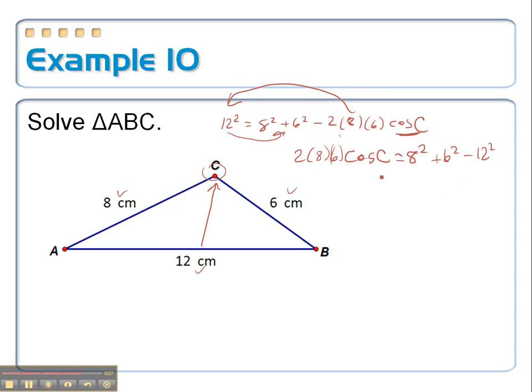Then to finish it off, I have to divide both sides by 2 times 8 times 6. That'll cancel out. And then I have to finally take the inverse cosine of this whole deal. So, 8 squared plus 6 squared minus 12 squared, all over 2 times 8 times 6. I'll finish this up in the next video.